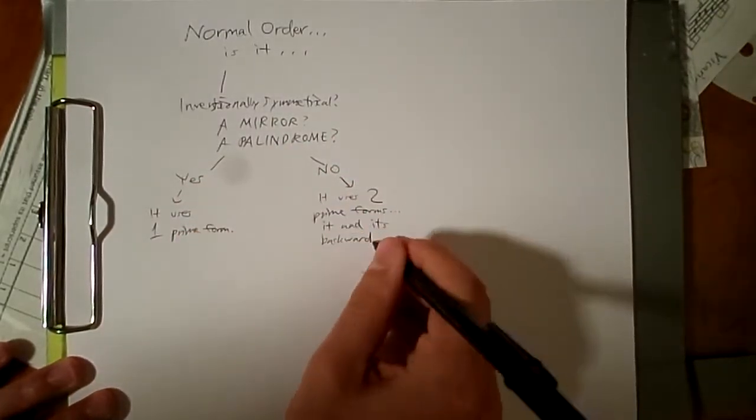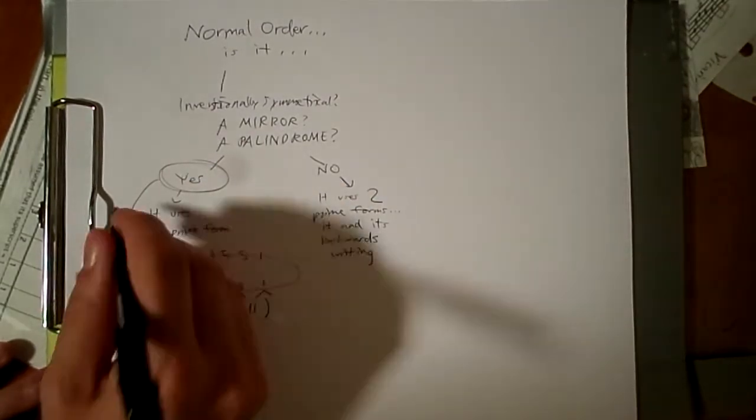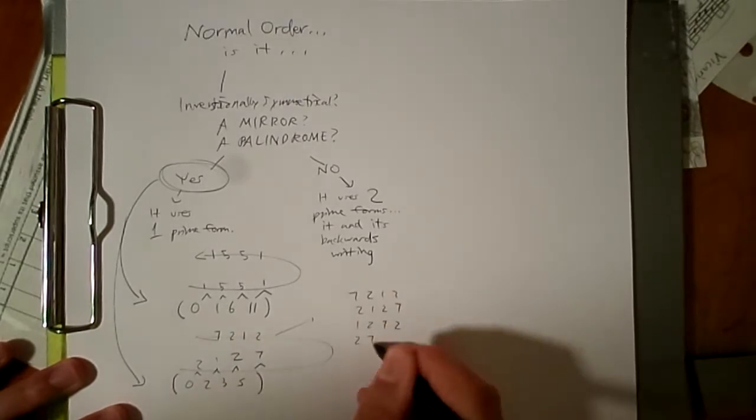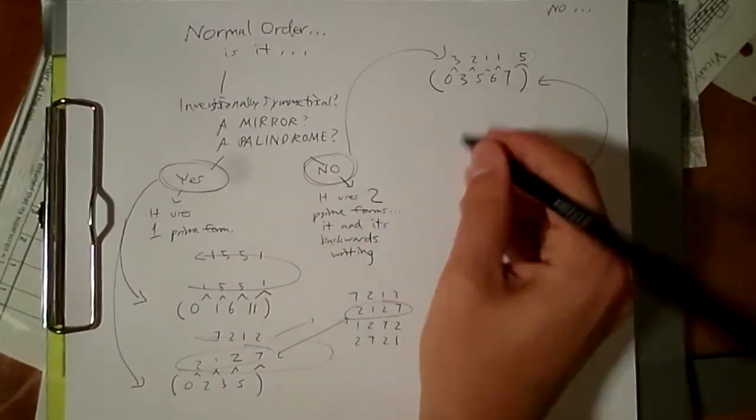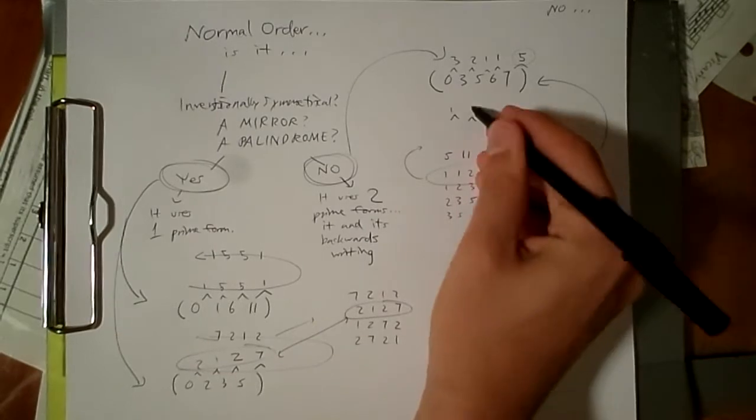Some sets, however, when you write them backwards are just the same either way, like this one here, or this one. Because of this, a normal order will do one of two things when inverted. The normal order either pairs up with its inversion, or it will map onto itself, or be inversionally symmetrical.